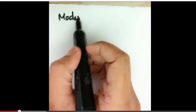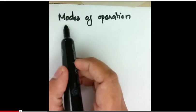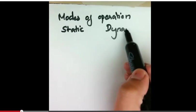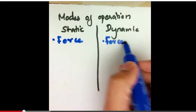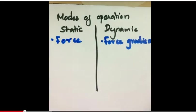Like the AFM, there are two major modes of operation, the static and the dynamic mode. In the static mode, force measurements between the cantilever and the surface are made, and in the dynamic mode, force gradient measurements are made.